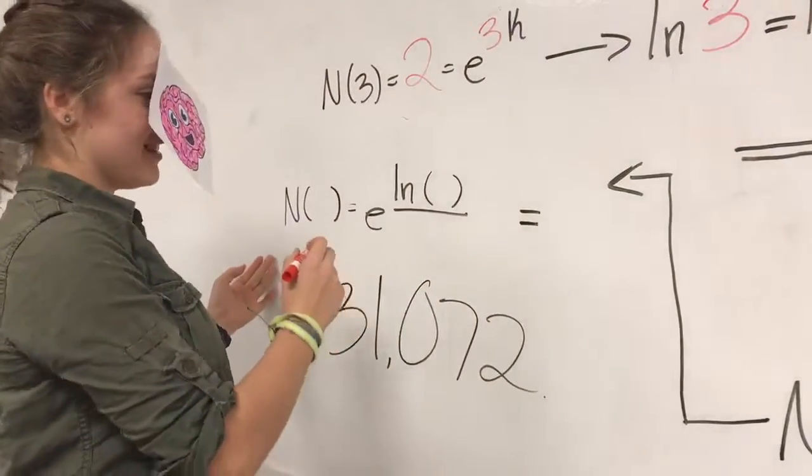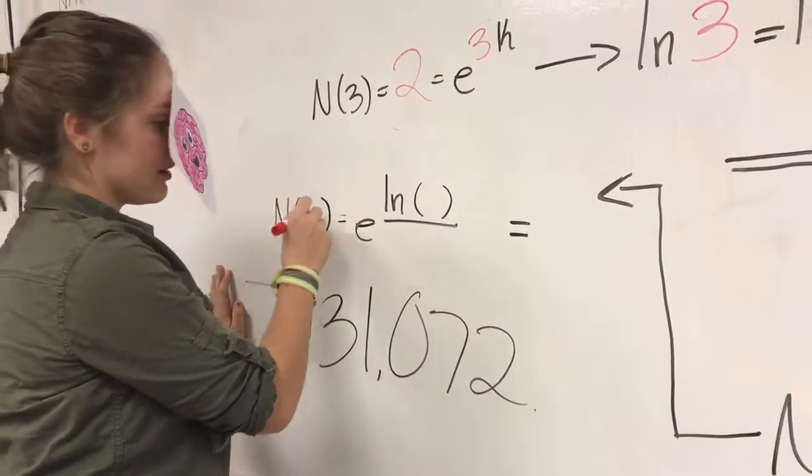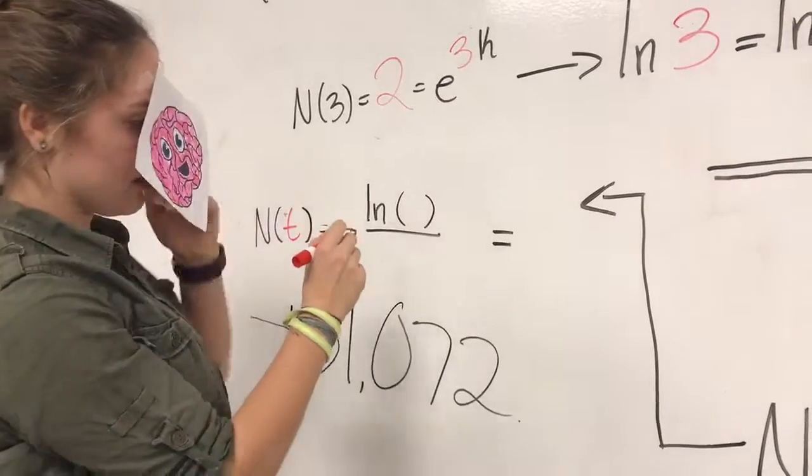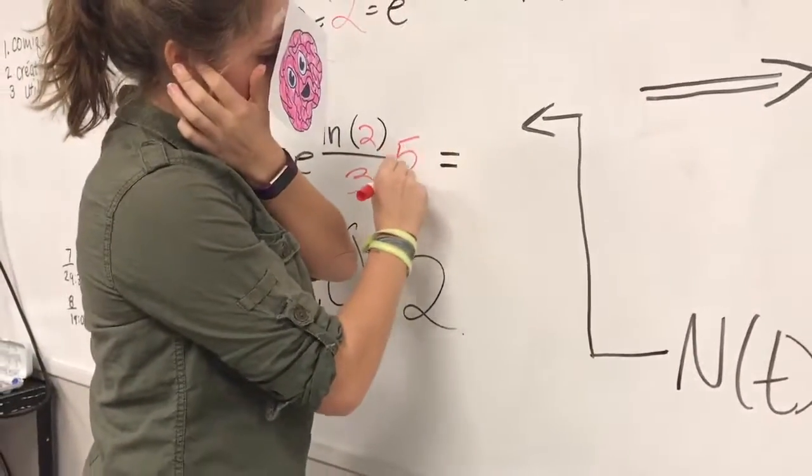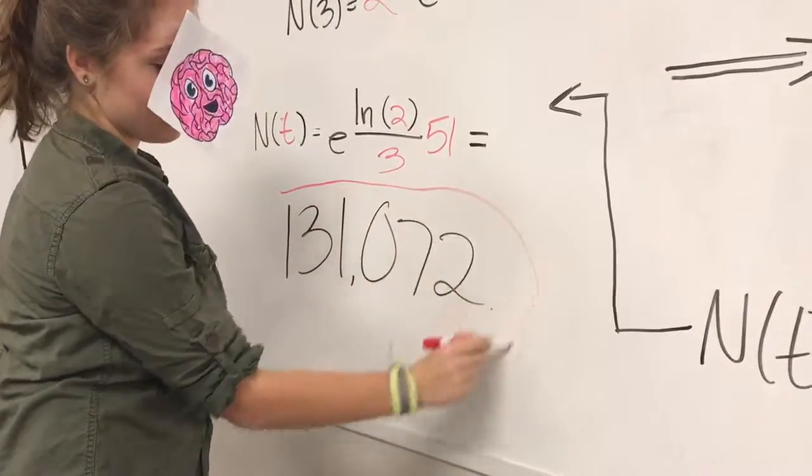Thus, we find that after 51 hours, there are 131,072 bacteria. And after all of calculating t and 2 and over 3 and putting in 51, you get 131,072 bacteria.